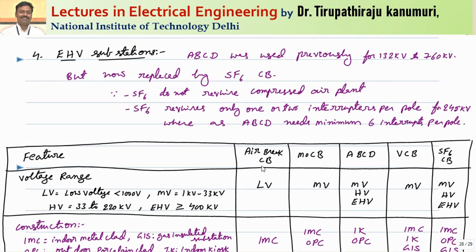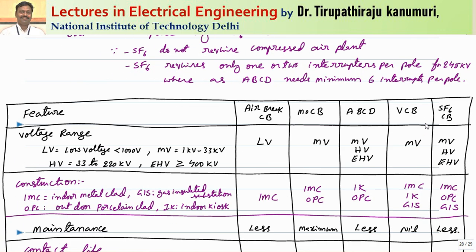For extra high voltage substation applications, air blast circuit breakers were previously used from 132 kV up to 760 kV, and below this, oil circuit breakers were used. But nowadays they are completely replaced by SF6 circuit breakers. SF6 circuit breakers do not need a compressed air plant — you fit it once and it operates, with only occasional maintenance for the SF6 gas. The size of the SF6 setup is much smaller and maintenance is less compared to air blast. Additionally, SF6 requires only one or two interrupts per pole up to 245 kV, whereas air blast needs up to six interrupts per pole.